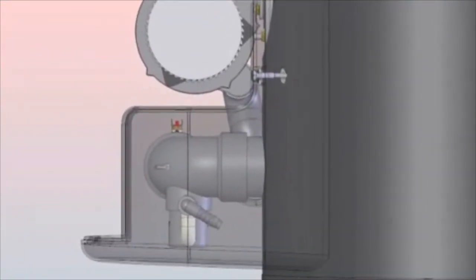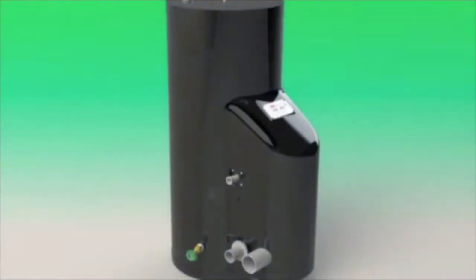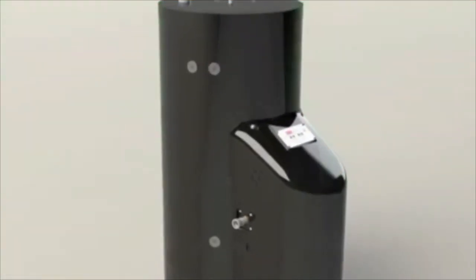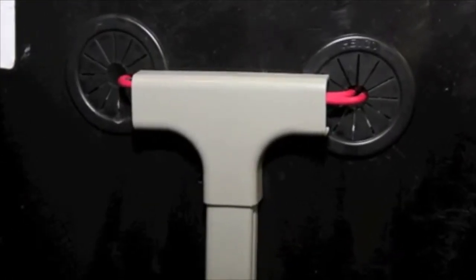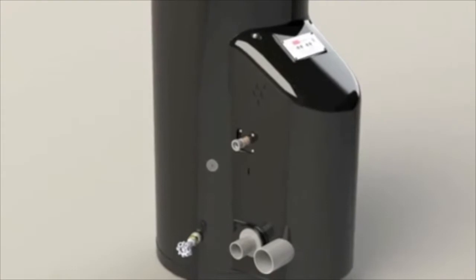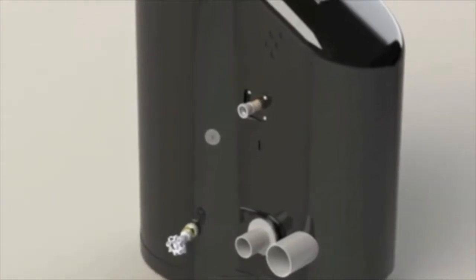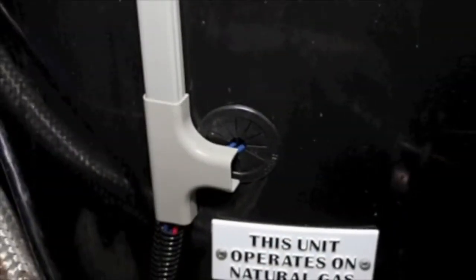The top water temperature sensor monitors supply temperature, and the control module adjusts heater firing rate to correct supply temperature. The bottom water temperature sensor monitors return water temperature, and the control module reduces or increases heater input accordingly.